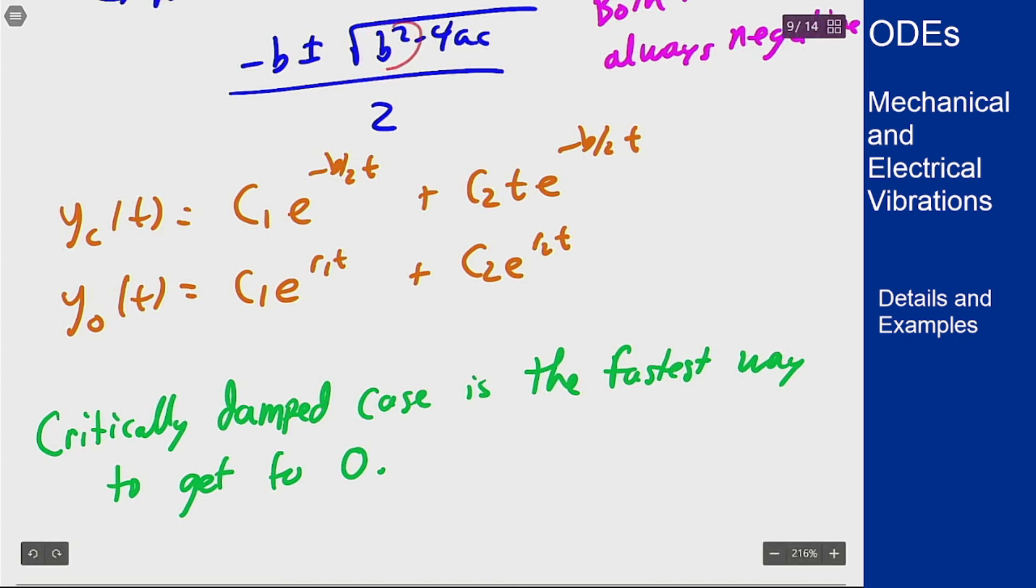So extra damping means I'm going to have one of these two terms that decays slower than -b/2t. This is where system optimization comes into play. If you want to optimize your system to relax to neutral as quickly as possible you want to be as close to critically damped as you possibly can.